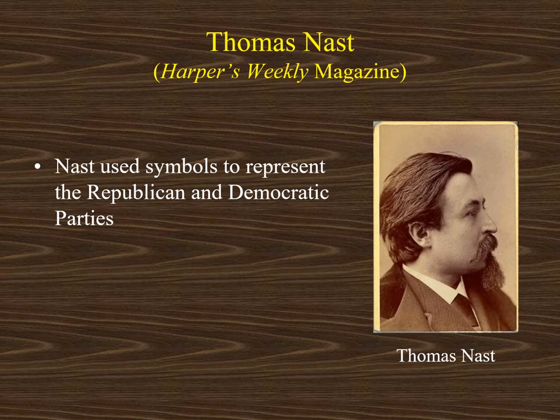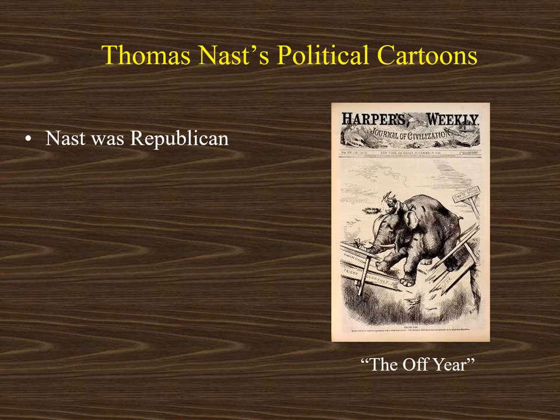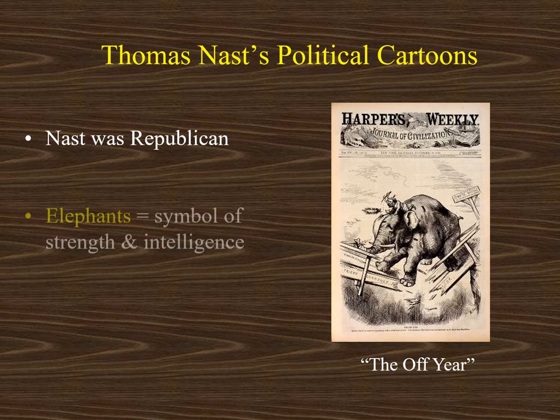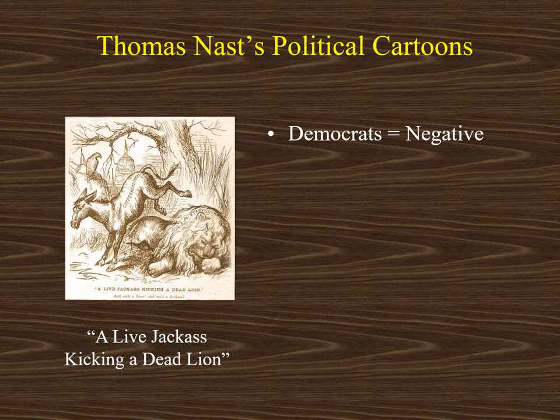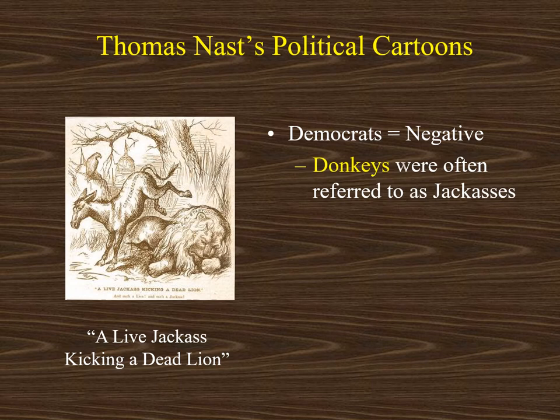The man shown here was Thomas Nast. He was a journalist and political cartoonist who used symbols to represent both the Democratic and Republican parties. Nast was a Republican, so he wanted to portray his political party in a positive light. Elephants, often a symbol of strength and intelligence, are connected to the Republican party — going back to these political cartoons of Thomas Nast. He wanted to portray Democrats in a negative light, and so he linked donkeys — often referred to as jackasses — to the Democratic party. Both of these symbols stuck over the years.